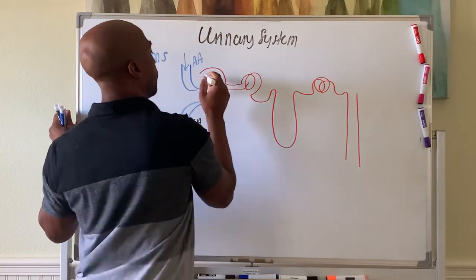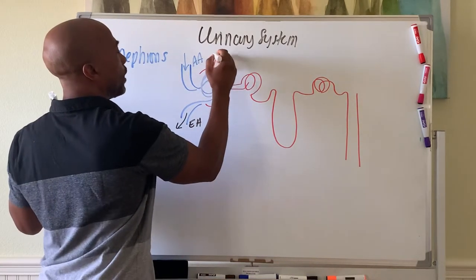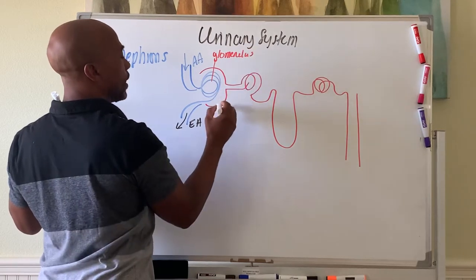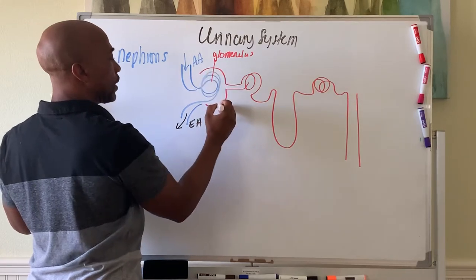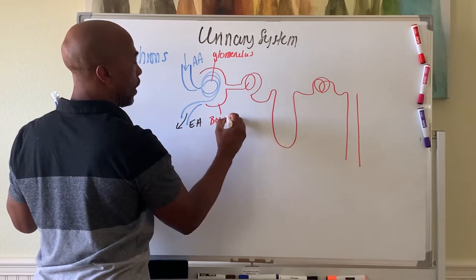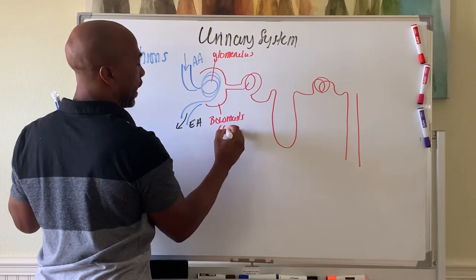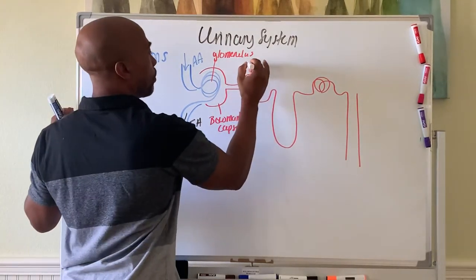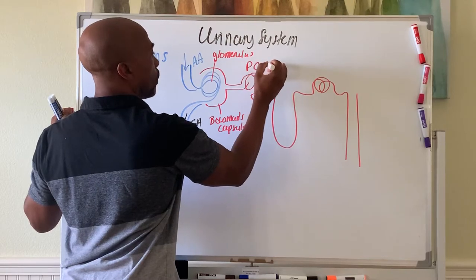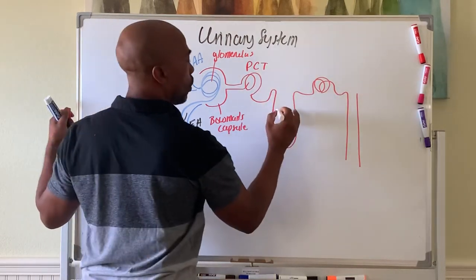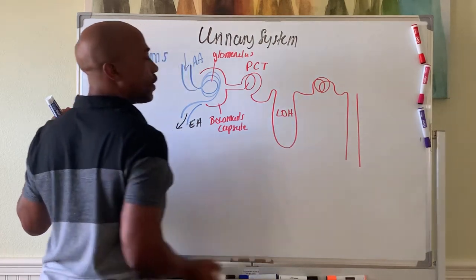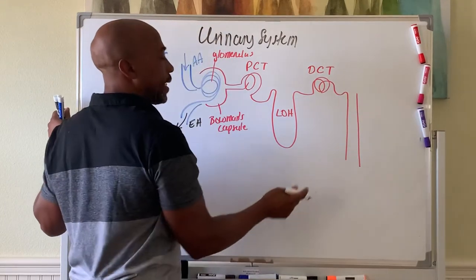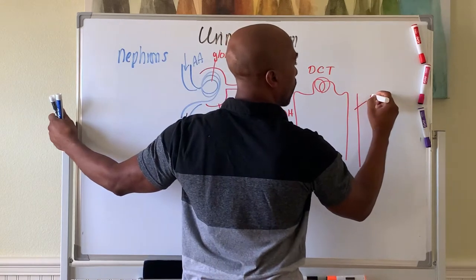Alright, so here we have laying these things out. This right here is called your glomerulus. This capsule around it is called the Bowman's capsule or also called your glomerular capsule. This right here is called your PCT, proximal convoluted tubule. This loop here is called the loop of Henle or the nephron loop. This over here is called the distal convoluted tubule, and then here is a common duct. This is called your collecting duct.